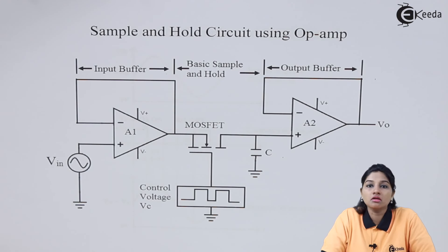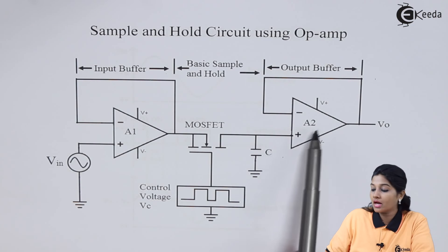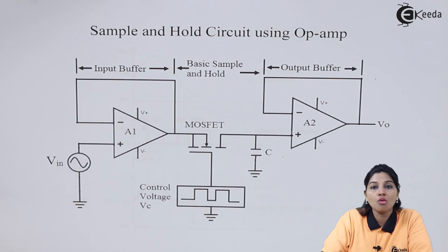The circuit consists of three different parts. The first is the input buffer, which is nothing but a voltage follower. The second part is the basic sample and hold circuit. The third part is again an output buffer that is a voltage follower. The first input buffer A1 is used to avoid loading of capacitor C.